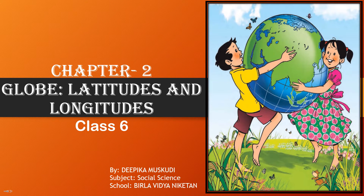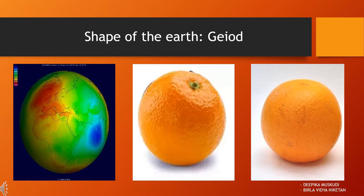So, let us find out more about globe, latitudes and longitudes. In the previous chapter, you have learnt that planet earth is not a sphere. Long, long ago, people thought that it was flat like a coin. But the actual shape of the earth is geoid, which means it is slightly flattened at the north and the south pole and bulges in the middle. You can resemble it through the shape of an orange. To make the study of the earth easy and on a small scale, geographers discovered globes.